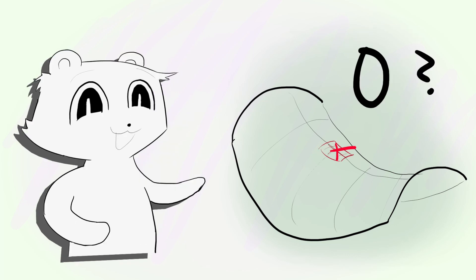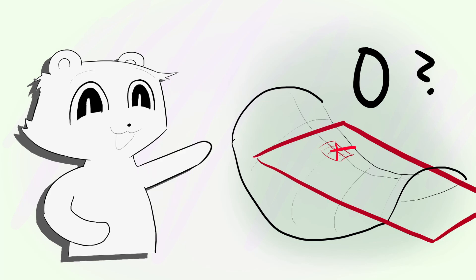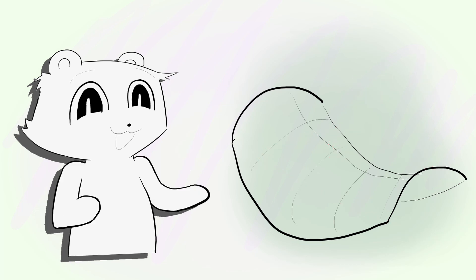Well, if we just blindly follow our definition, then we would say the curvature at the saddle is zero. I mean, if you look at a saddle, the closest thing you can fit there is a flat plane, but that doesn't feel right.